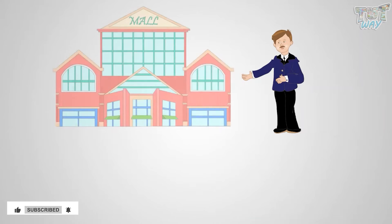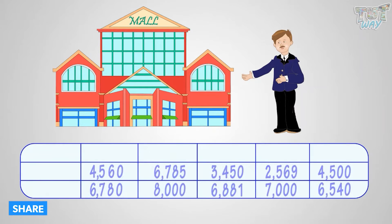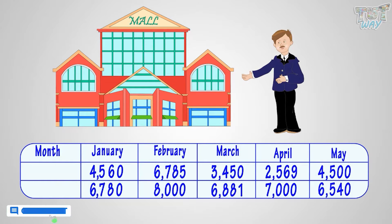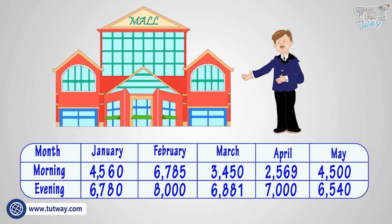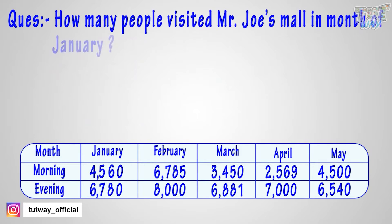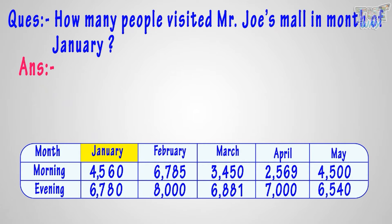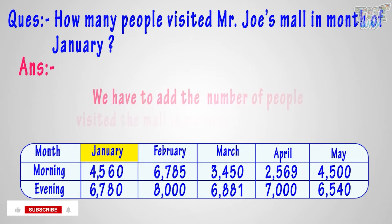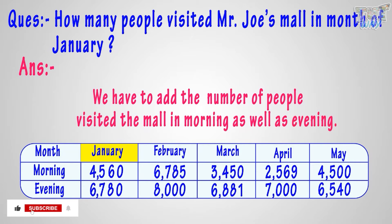Mr. Joe owns a mall. He recorded the number of people visiting his mall in the past five months in the morning and evening. Now let's find out answers to a few questions based on what Mr. Joe recorded. How many people visited Mr. Joe's mall in the month of January? We are asked to find out the total number of people, so we have to add the number of people who visited the mall in the morning as well as evening.